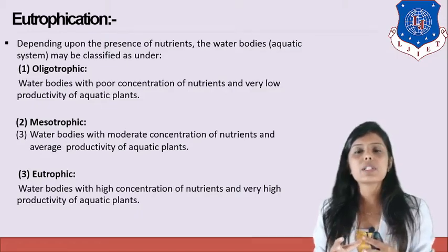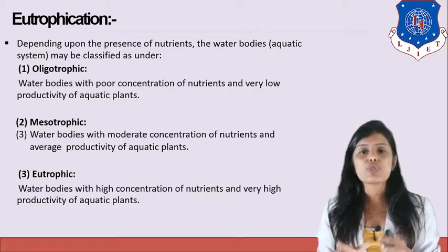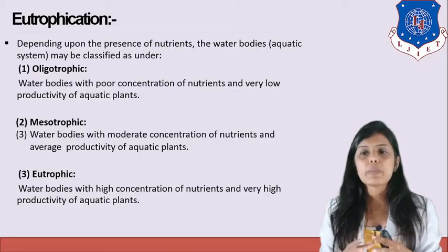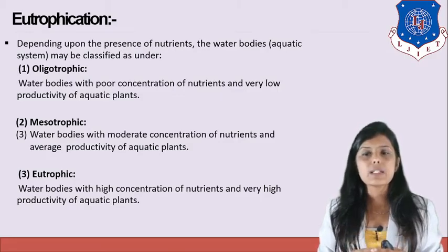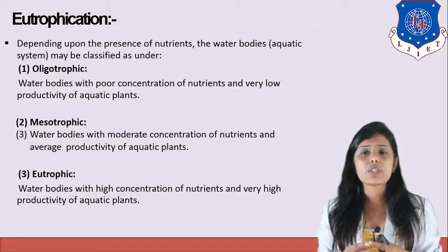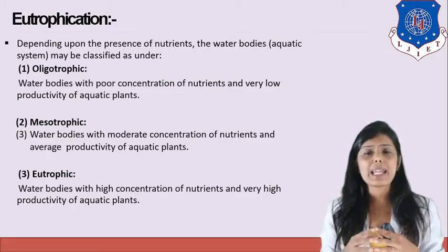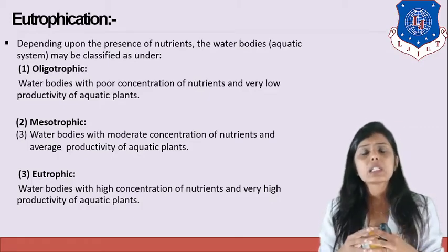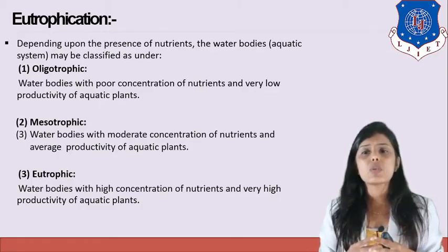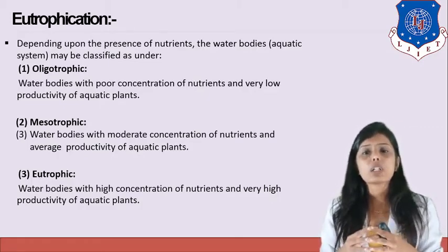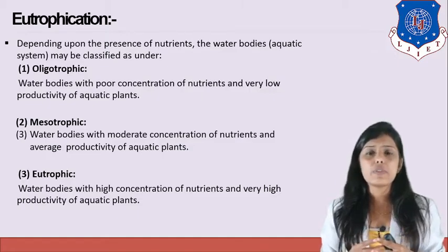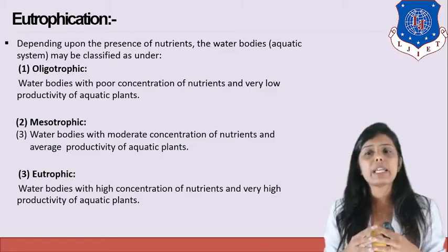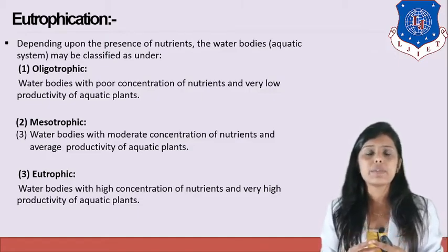The second stage is the mesotrophic stage. Whenever pollutants are added to the water, the stage transfers from oligotrophic to mesotrophic. The mesotrophic stage has moderate concentration of nutrients and average productivity of aquatic plants. The third stage is the eutrophic stage, where water bodies have high concentration of nutrients and very high productivity of aquatic plants.